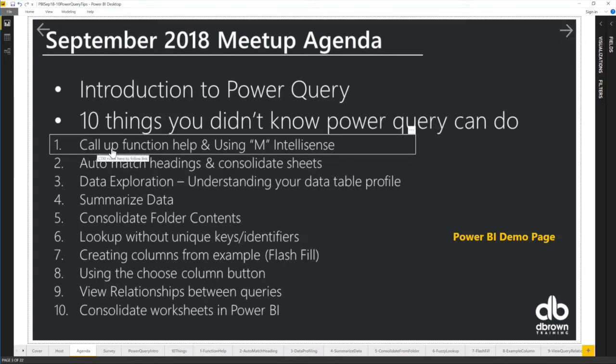First thing we'll talk about is the call up function and help, then auto-matching headings and consolidating sheets, data exploration, summarizing data, consolidating from a folder, and then looking up when you're trying to look up two tables when you don't have a unique reference — it's like a VLOOKUP without a unique reference, but VLOOKUP in Power Query.